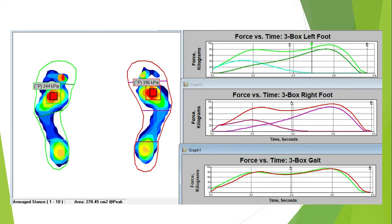As we look at the averages of those steps, we have 344 kPa in the left, 396 in the right. And you see back on the left, there's a heavier loading through the left distal hallux.